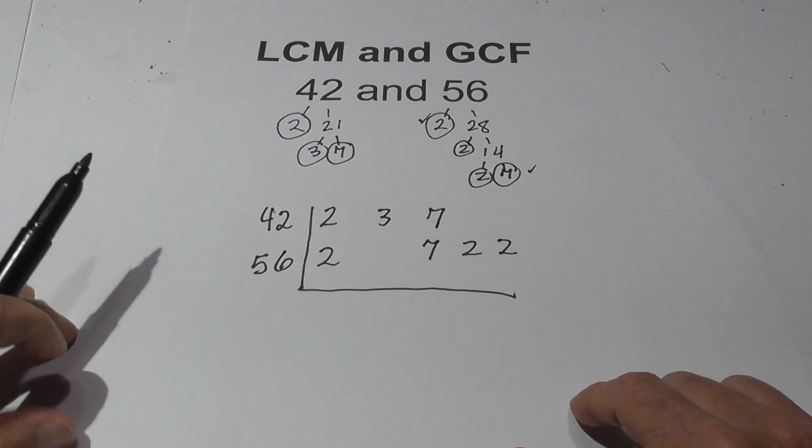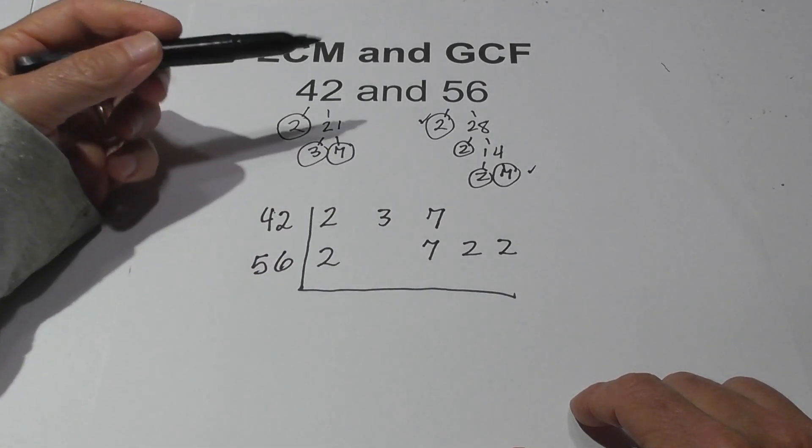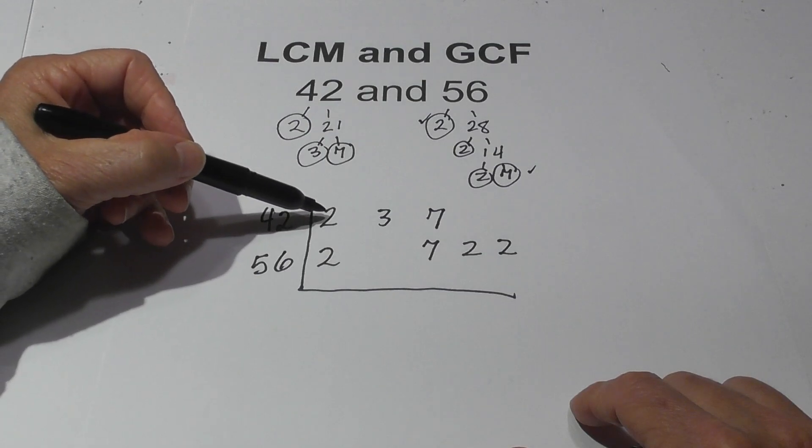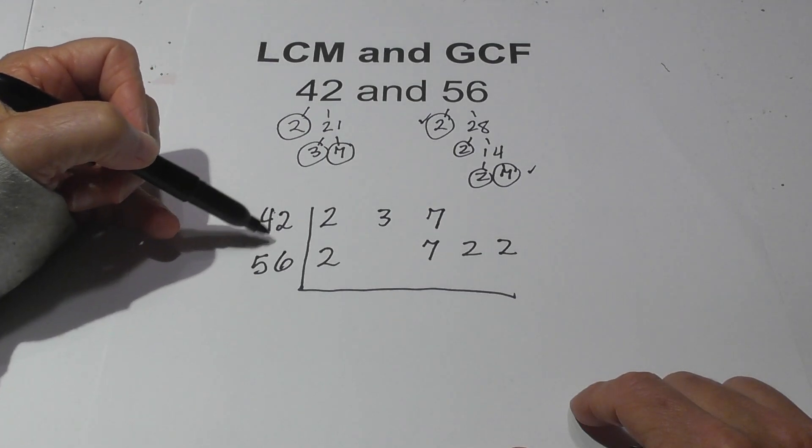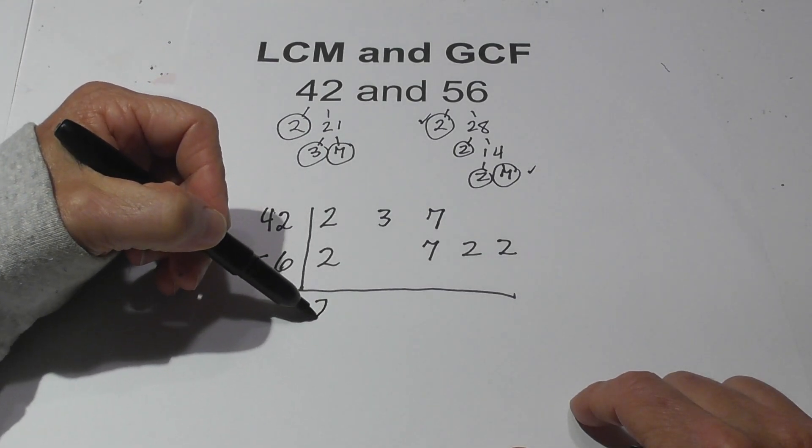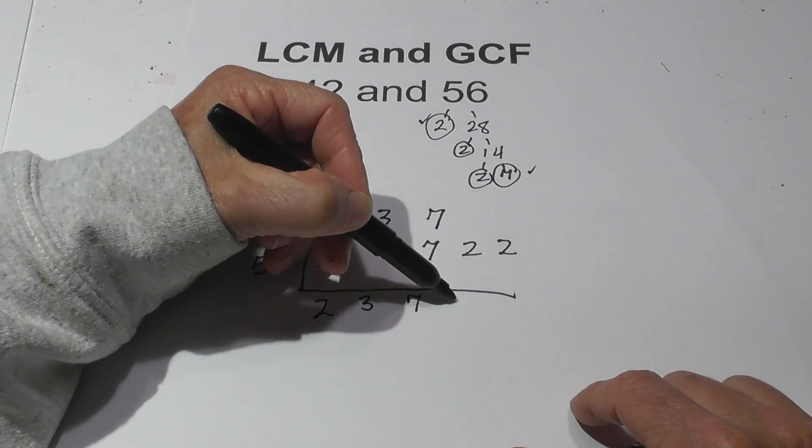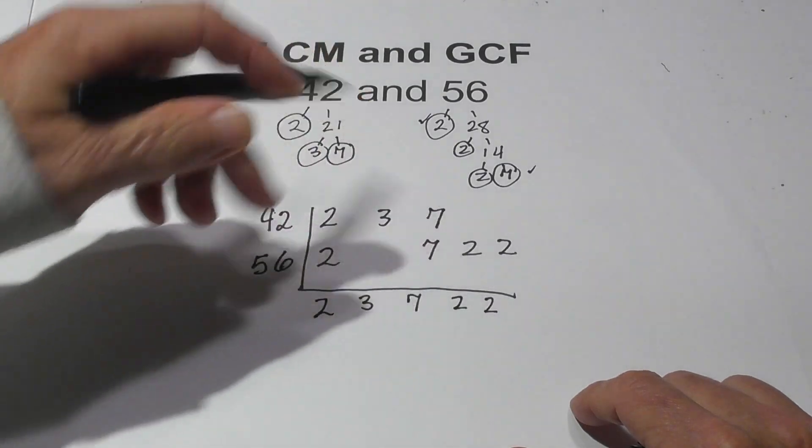Now, for the lowest common multiple, basically you just multiply all this together, but you follow this rule. If you have 2 of the same numbers, like the 2 is in the 42 and the 56, then just bring 1 down. I'm going to bring 1, 3 down. I'm going to bring 1, 7 down. Bring down the 2. Bring down the 2.